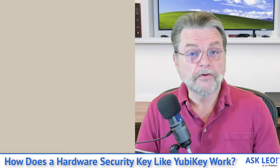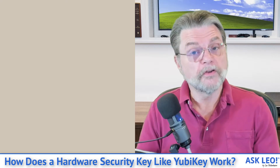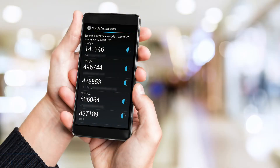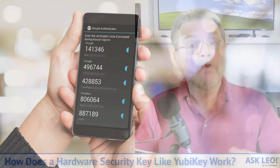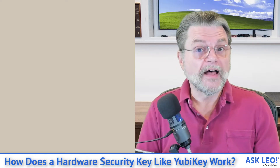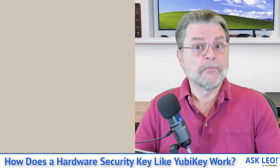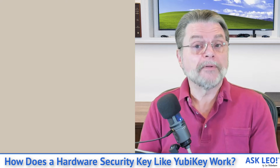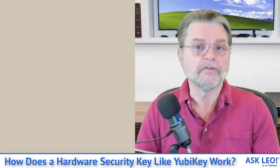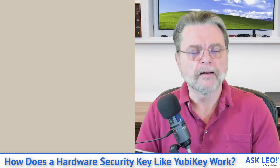Another form of two-factor authentication is the Google Authenticator program, where you have an application on your phone that has been associated with your account. When you are asked to provide your second factor proof, you enter a code from that application and it proves you're in possession of your second factor — the phone running Google Authenticator or a compatible equivalent.